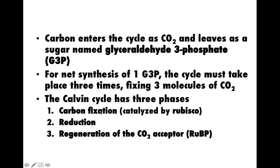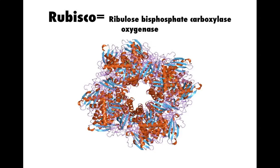The three phases of the Calvin cycle are: carbon fixation — adding CO2 to organic molecules; reduction — taking that carbon dioxide and reducing it, giving it more electron density and more potential energy; and regeneration of the CO2 acceptor, a molecule called ribulose bisphosphate, or RuBP. Carbon fixation is catalyzed by an enzyme thought to be the most abundant enzyme on the planet called RUBISCO, which stands for ribulose bisphosphate carboxylase oxygenase.